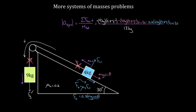So if we just solve this and calculate, we're going to get 4.75 meters per second squared as the acceleration of this system. The four kilogram mass will accelerate up the incline with an acceleration of 4.75 m/s², and the nine kilogram mass will accelerate downward with a magnitude of 4.75 meters per second squared.